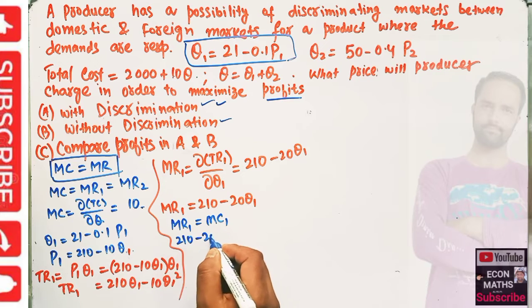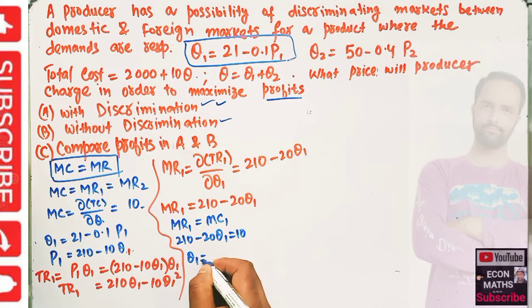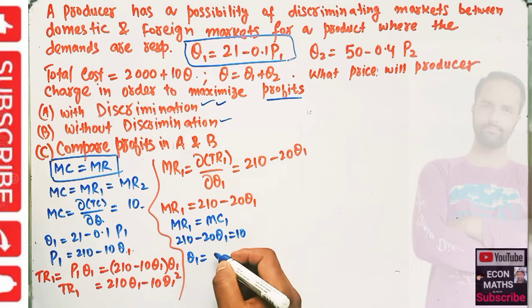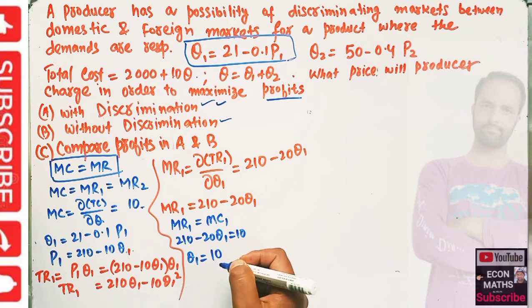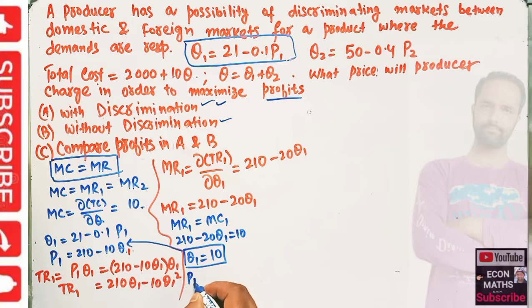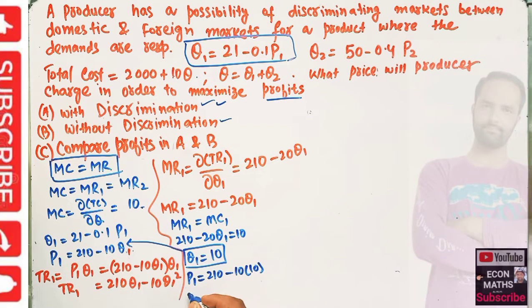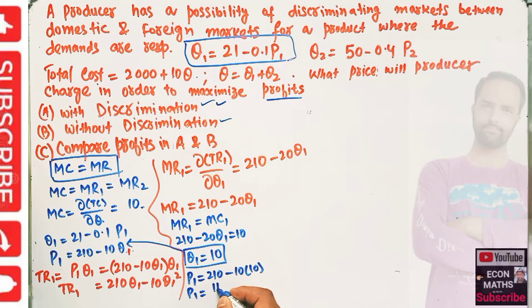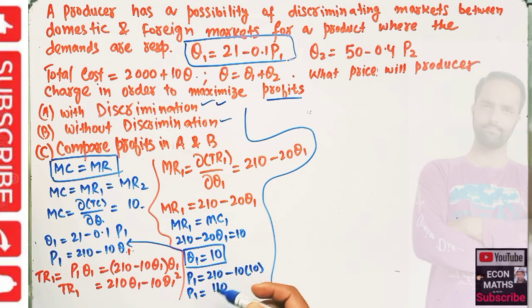Setting 210 - 20Q1 = 10 (marginal cost) and solving gives Q1 = 10. To find P1, we plug Q1 = 10 into the inverse demand function: P1 = 210 - 10(10) = 210 - 100 = 110. So the equilibrium output in the first market is 10, and the equilibrium price is 110.